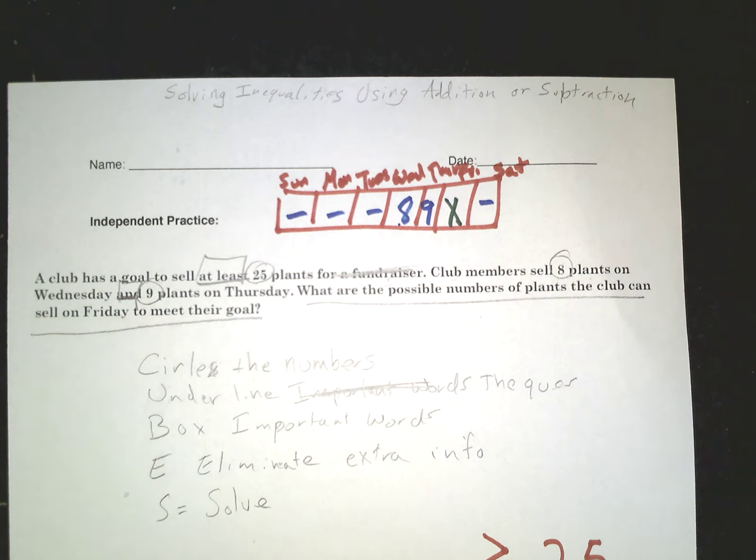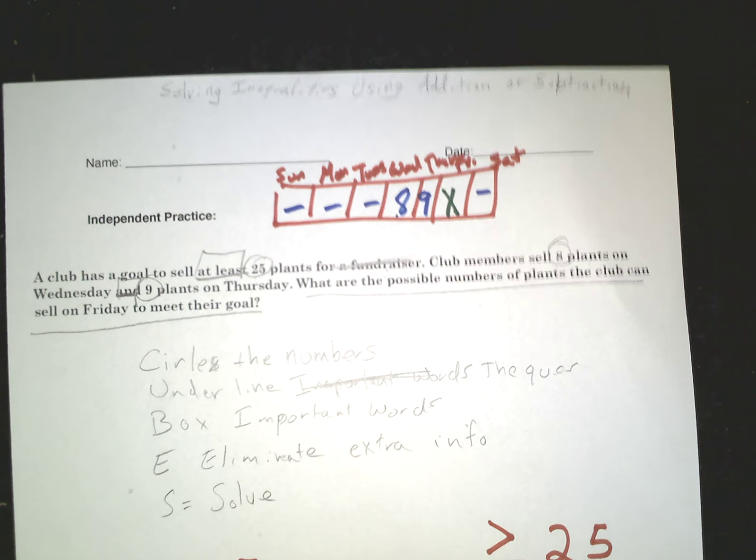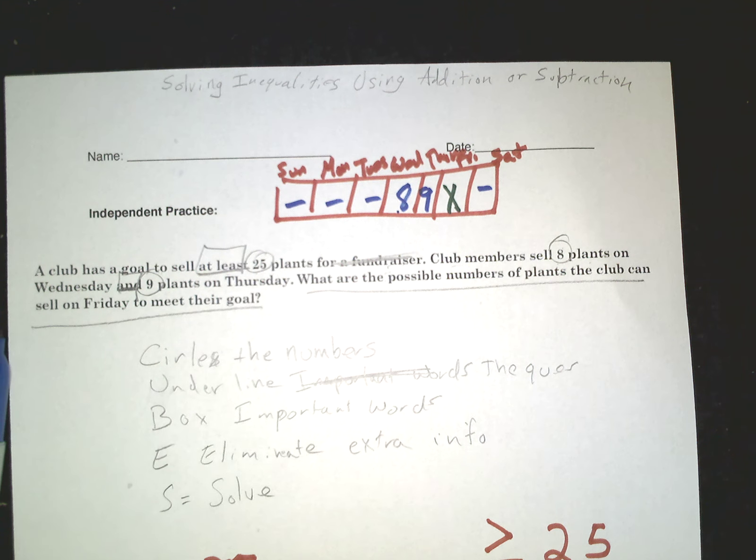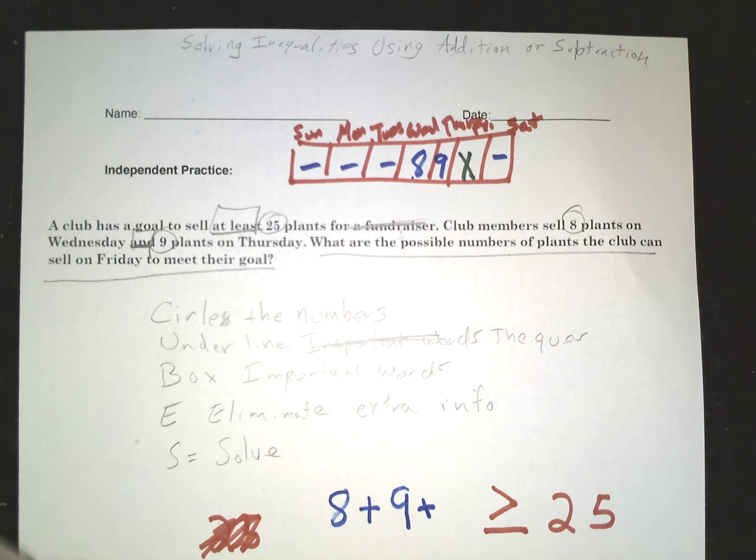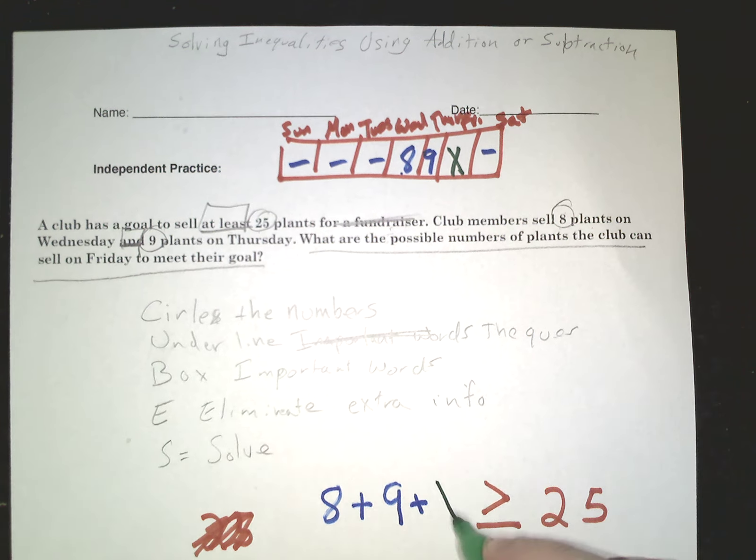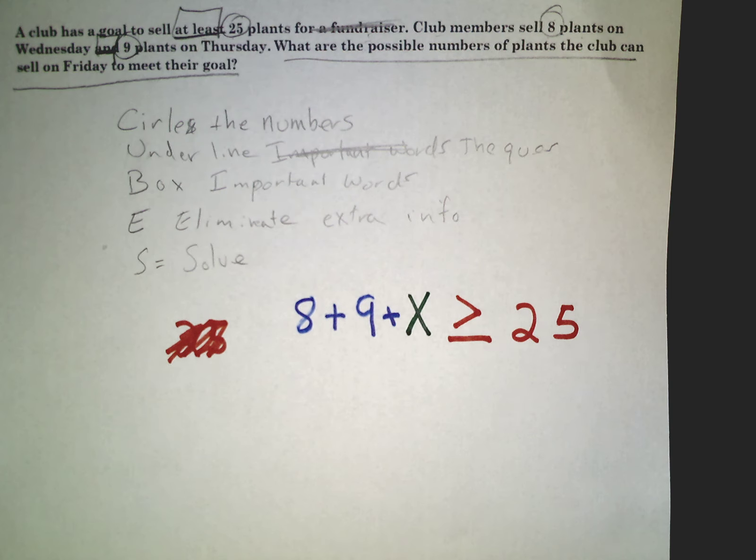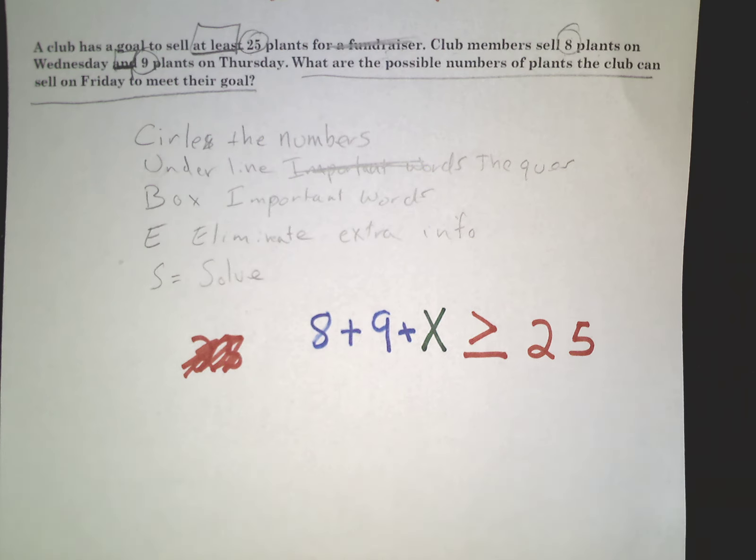So this plus this plus this must equal 25 or be greater than. Let's write this out again. We'll write it the way it's up there in our calendar: 8 plus 9 plus whatever we sell on Friday, and we don't know that yet, that's the x. So there's our equation to solve.